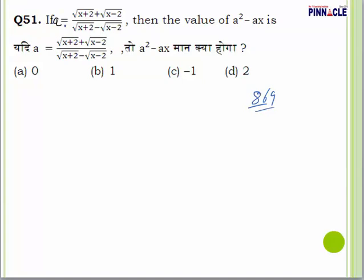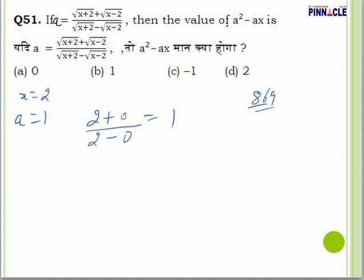Question number 51: if 'a' is equal to a given expression, we have to find the value of a squared minus ax. For such questions, you can solve by substituting a value. For example, put x equal to 2, then it becomes 2 plus 2 equals 4, root of 4 is 2, and 2 minus 2 is 0, root of 0 is 0. So a equals 2 divided by 2, which is 1. Then a squared minus a times x equals 1 minus 1 times 2, which is minus 1. Option C should be the answer.